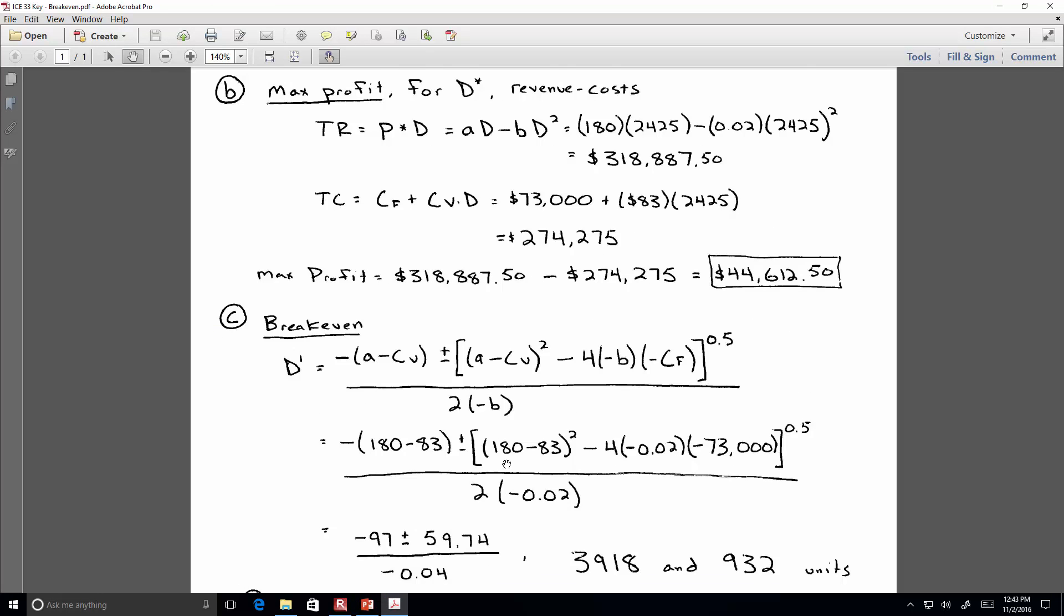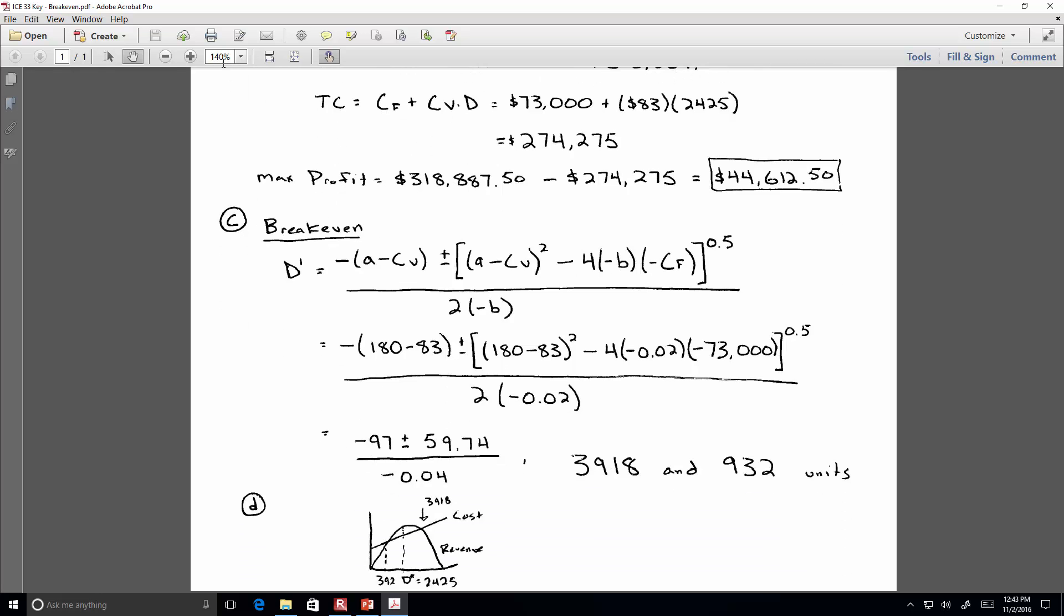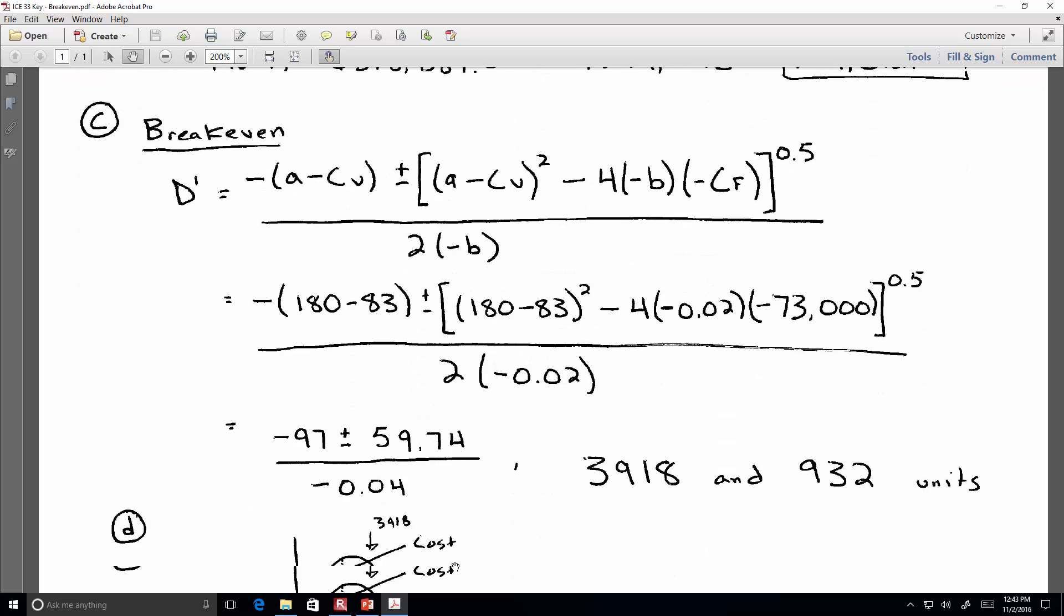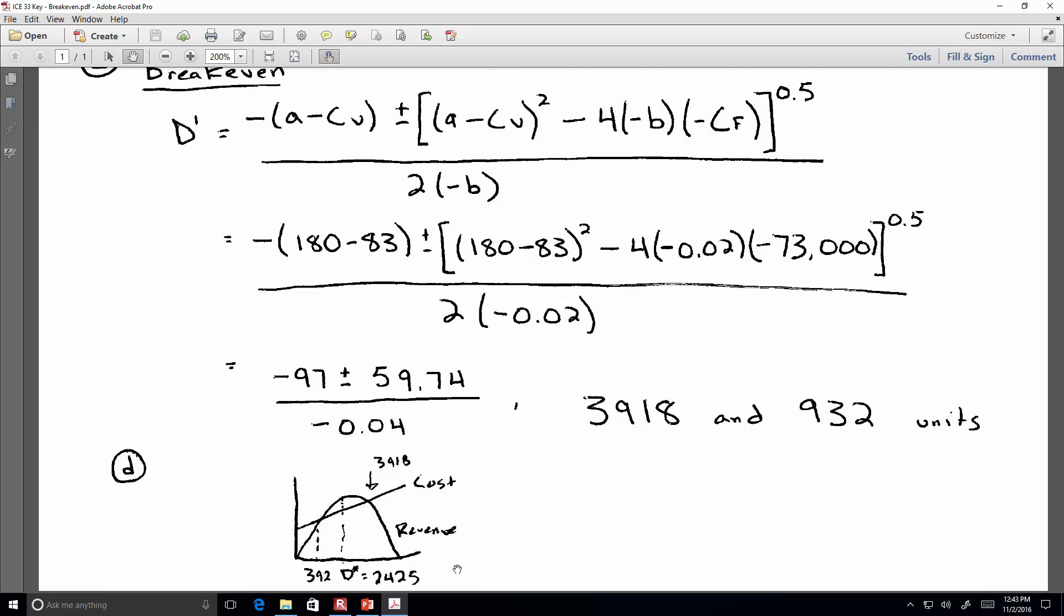I asked you to do a little sketch, and my sketch is pretty small and pretty crude, but it's just illustrating that we have a cost line, a revenue curve. They intersect at two points, and those are our break-even points of 932, and optimal demand is 2425, and then the second break-even point is 3918.